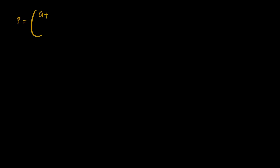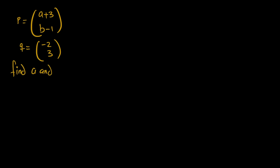Next problem: we have vector p with x-component (a + 3) and y-component (b − 1), and vector q with x-component negative 2 and y-component 3. We are told to find a and b, given the condition that vector p equals vector q.